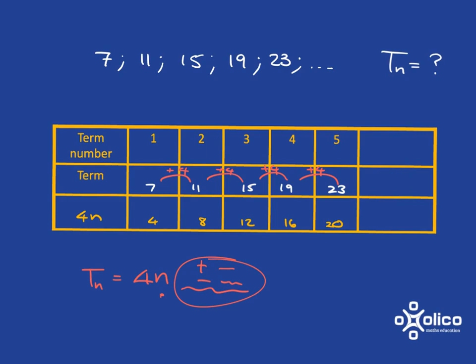Now we can see that what we have, if it was just 4n, we'd be getting 4 in place of 7, and 8 in place of 11, 12 in place of 15, 16 in place of 19. What do we need to do to get from 4 to 7, or from 8 to 11, or from 12 to 15? Hopefully it's very easy for you to see that what we needed to do to get there is simply to add on a 3. And so our Tn will be 4n plus 3.